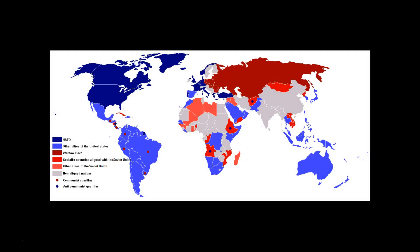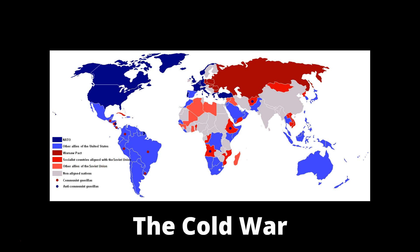This resulted in a stalemate, a bipolar confrontation in which these two superpowers, the United States and the Soviet Union, rather than war with each other directly, sought to expand their influence through economic and military warfare throughout the entire rest of the globe. This confrontation, known as the Cold War, dominated global politics for the next 40-plus years.